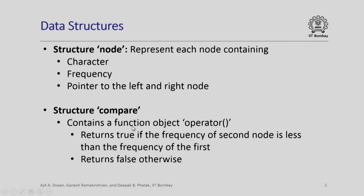This particular function object will return true if the frequency of second node is less than the frequency of first otherwise it will return false. This will help us to compare two frequencies.